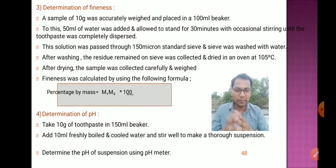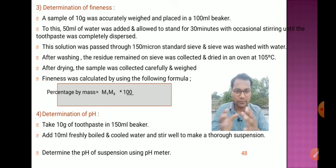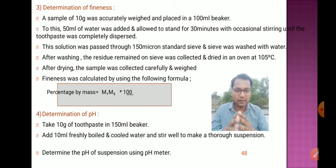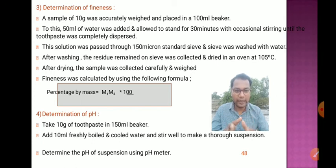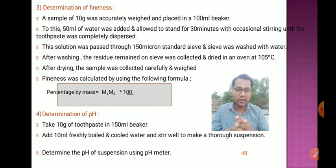Fineness is calculated using the formula: percentage by mass = (m1 / m2) × 100, where m1 is the mass of residue and m2 is the original sample mass. In this way we can determine the fineness of the toothpaste.